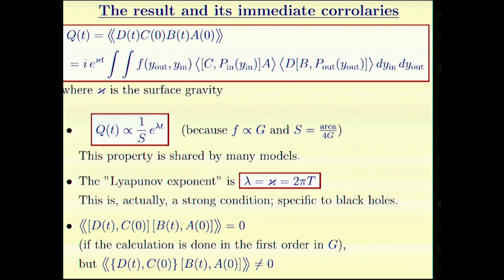First, we notice that this correlator grows exponentially in time. This happens for a large class of models. It's not an acid test. It can be passed pretty easily. But the Lyapunov exponent is an interesting thing. For the black hole, the Lyapunov exponent is exactly 2π times the temperature. That's very peculiar. It's specific to black holes.